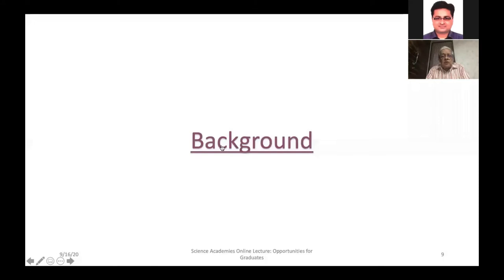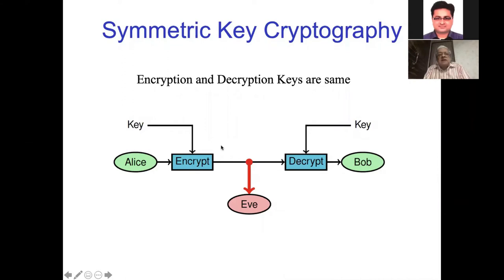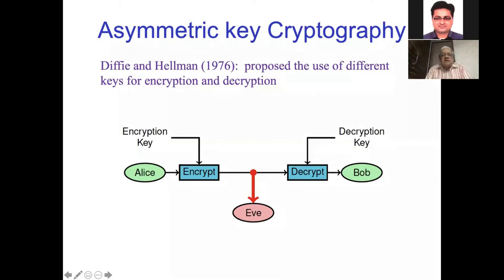Let me give a brief cryptography background. In symmetric cryptography, the encryption and decryption keys are the same — Alice encrypts with the key, sends it over the channel, and Bob decrypts with the same key. In asymmetric key cryptography, Diffie-Hellman in 1976 proposed using different keys for encryption and decryption.